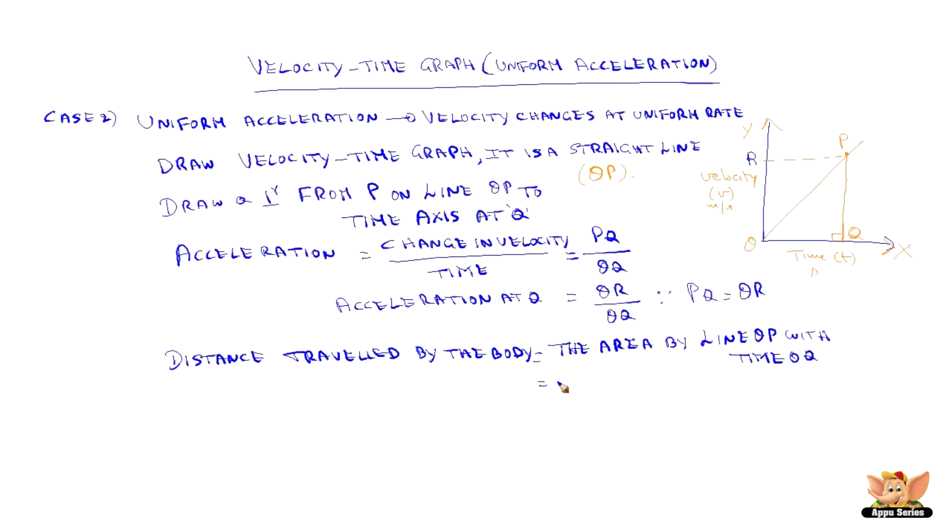So this becomes, if you see here, OPQ is a triangle. So it is area of triangle OPQ which is nothing but half into base. Base is OQ and height is PQ which is half into OQ into OR since PQ is equal to OR.